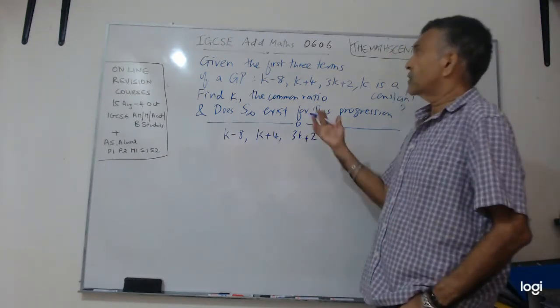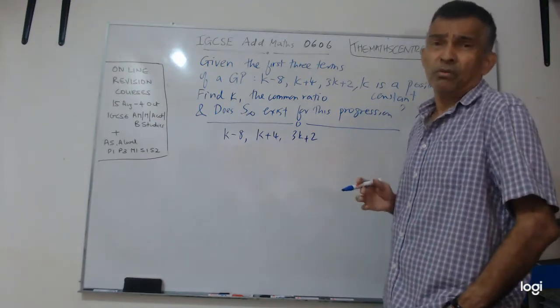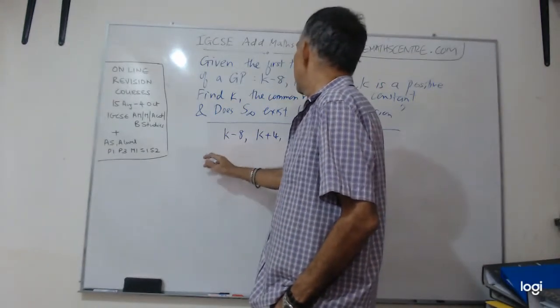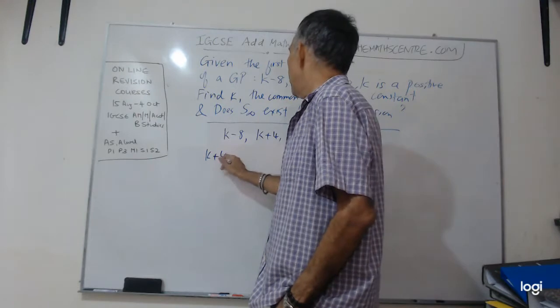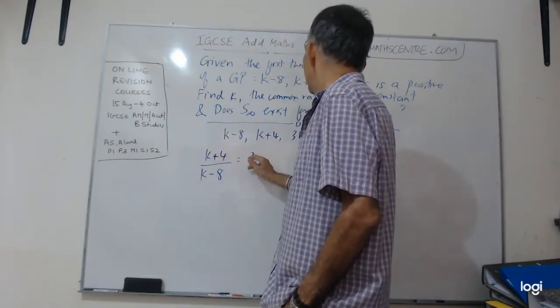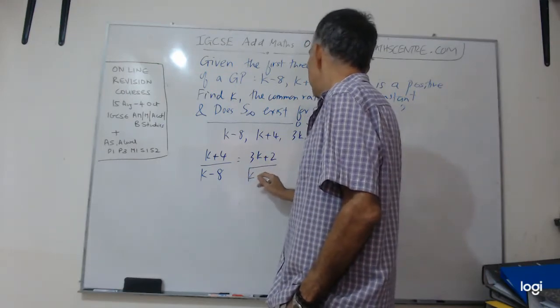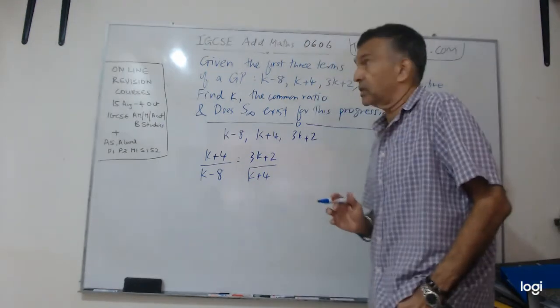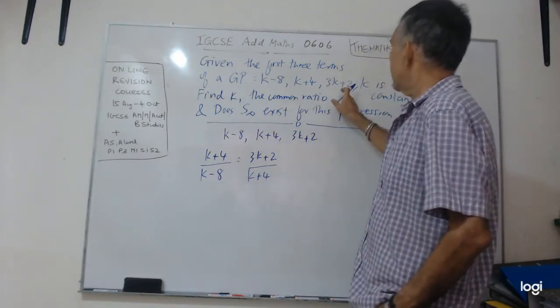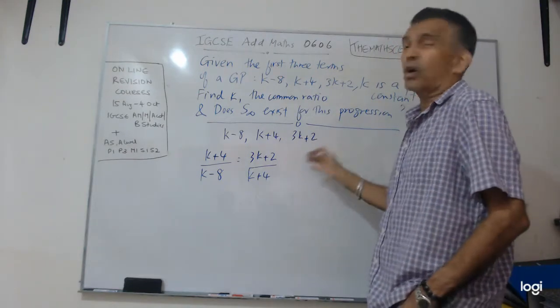The idea in this question would be a problem like this, you know you have to use the idea behind the common ratio. So the common ratio, in this case, would be K plus 4 over K minus 8 equals 3K plus 2 over K plus 4.